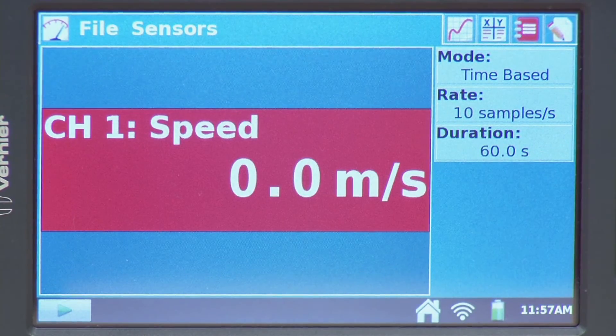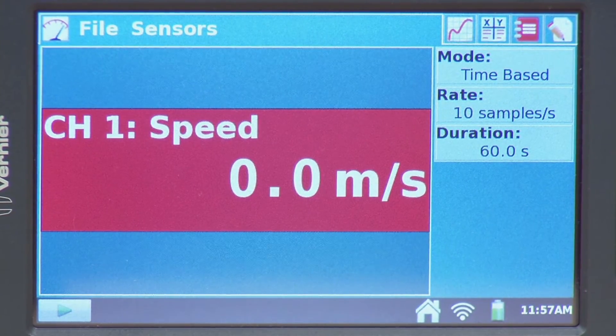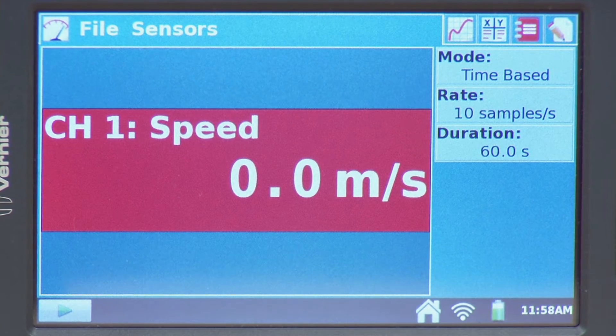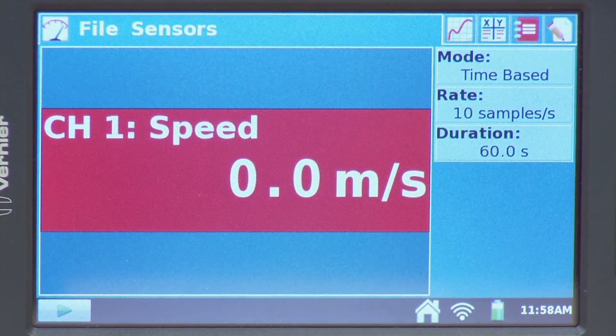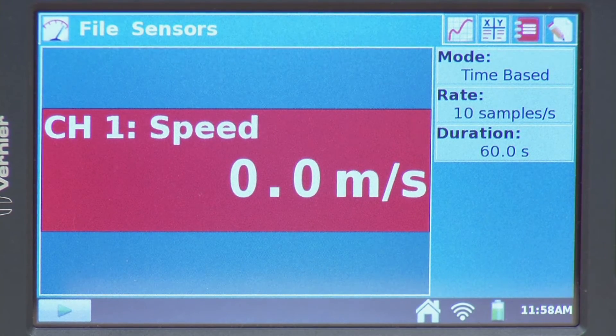Let's take a look at our default collection parameters. So it's time-based, it's going to measure the wind speed as a function of time, 10 samples per second, and the duration of 60 seconds. So it's just going to be a one-minute collection here.